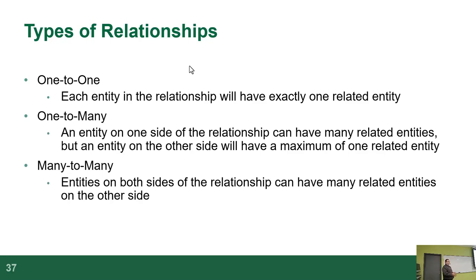You have one-to-many, which means a relationship between one entity and many other instances in another entity. A good example, super-simplifying how the data actually is, is prof to students. One of me has many students. Each of you have one 8250 teacher. So if we're talking about just this class, it's a one-to-many relationship.